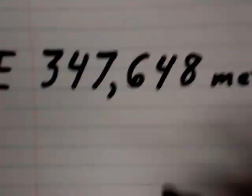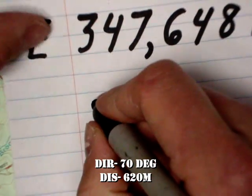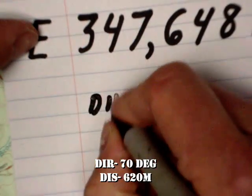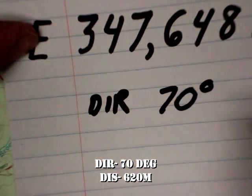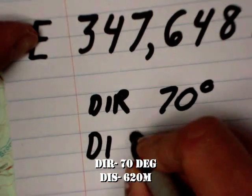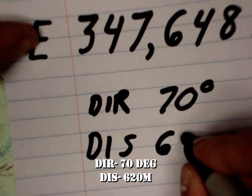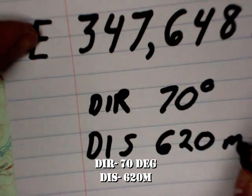So now write that down. Your direction is 70 degrees. The distance is 620 meters.